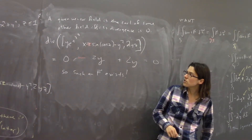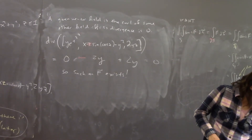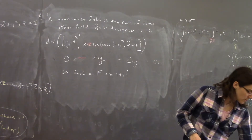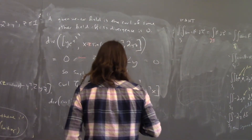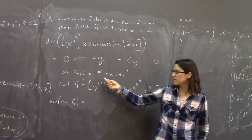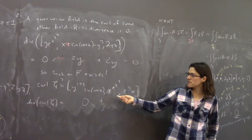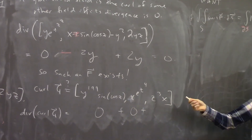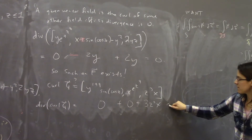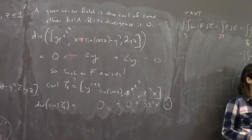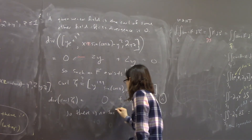Let's try a different one: discover if there's a field g such that its curl equals (y^199, ..., x·z³). Taking the divergence: partial of the first with respect to x is zero, partial of the second with respect to y is zero, partial of the last with respect to z is 3z²x. That's not zero — it's not identically zero — so there is no such g.